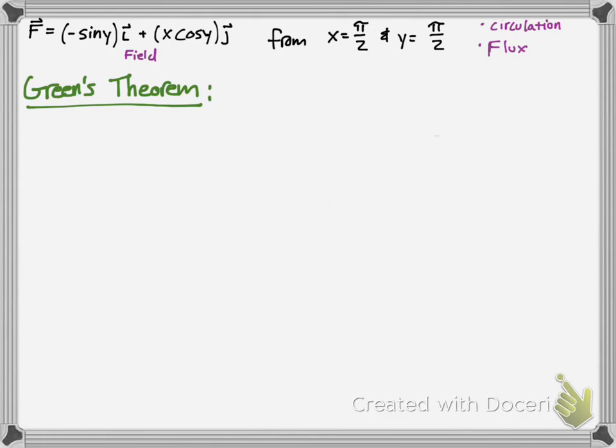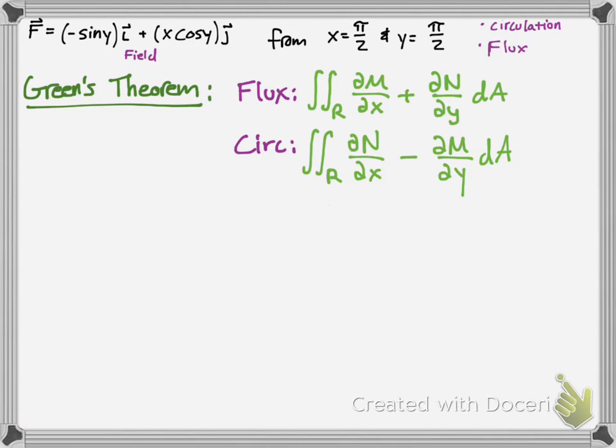So, that's what we're going to be calculating, and we're going to use Green's Theorem as a method of calculating that. Flux is given using this formula for Green's Theorem, and then circulation is given by this formula. Just notice the differences. Flux has the positive sign, circulation has the subtraction sign. There's another variation of the Green's Theorem, but we're going to be using this one for the following example.